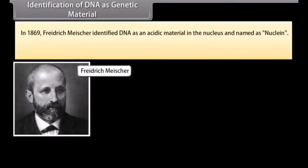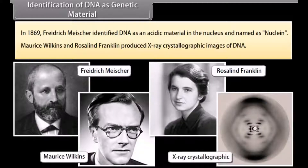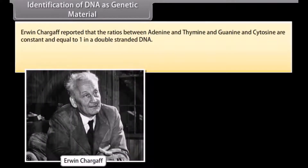In 1869, Frederick Miescher identified DNA as an acidic material in the nucleus and named it Nuclein. Morris Wilkins and Rosalind Franklin produced X-ray crystallographic images of DNA. Erwin Chargaff reported that the ratio between adenine and thymine, and guanine and cytosine, are constant and equal to 1 in a double-stranded DNA.